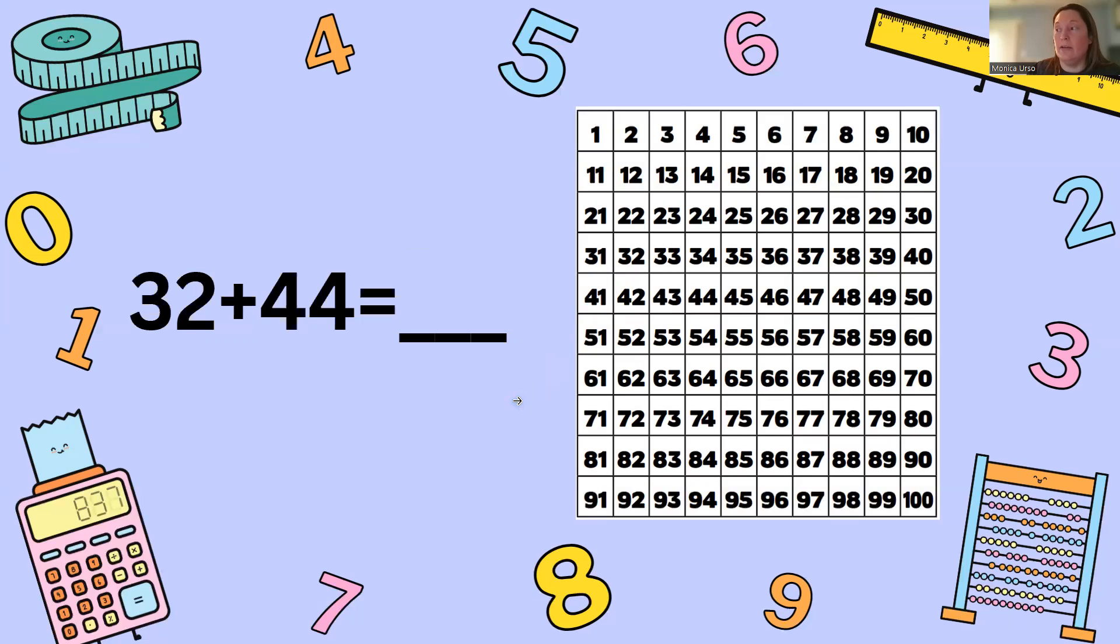So we're going to start with 32, we're going to add 40 so we're going to move down four rows, 10, 20, 30, 40 and then we're going to move to the right four: 1, 2, 3, 4 and we get our answer of 76.